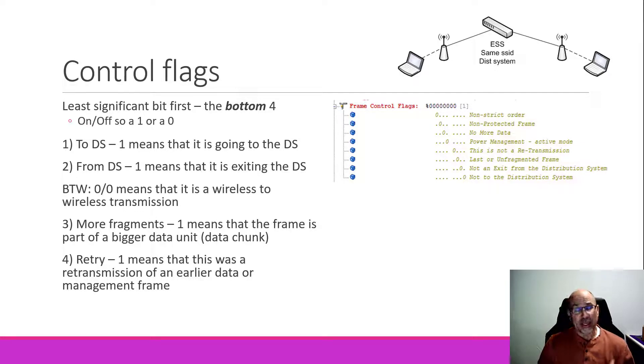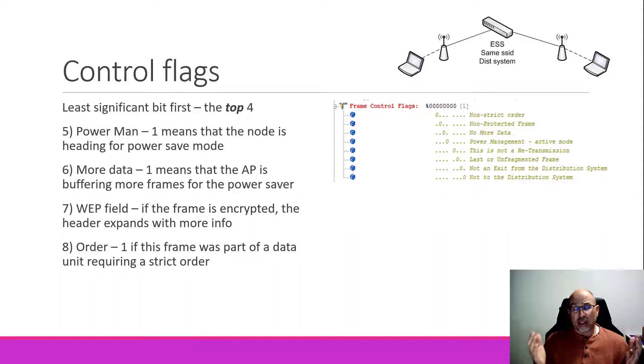The retry flag is there for any number of the things that can go wrong in a wireless network. If a data frame or a management frame have to be retransmitted, then the retry flag is set to 1. For the other four flags, the next one is power management. One of the other things that the access point has to keep track of is whether or not nodes go to sleep, whether or not they go into power management. When a node finishes a transmission, it might indicate that it's going into power save mode. And then what it's going to do is set this flag to 1. The access point picks that up and all of a sudden realizes that it's got to start buffering frames for that particular node.